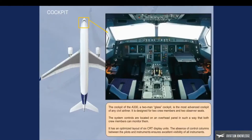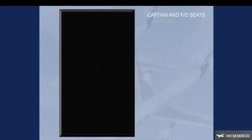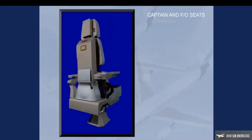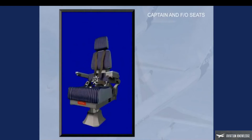The cockpit of the A330 is a two-man glass cockpit and is the most advanced cockpit of any civil airliner. It is designed for two crew members and two observer seats. The system controls are located on an overhead panel so that both crew members can monitor them. It has an optimized layout of six CRT display units, and the absence of control columns between the pilots and instruments ensures excellent visibility. The pilots' seats are electrically or manually adjustable, and all seat adjustments will be presented during the simulator session.